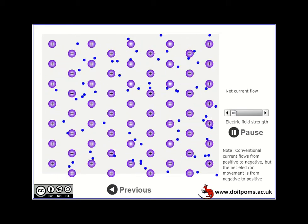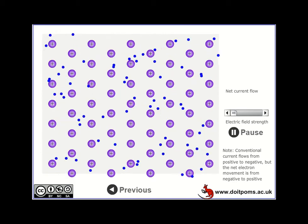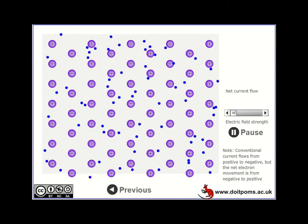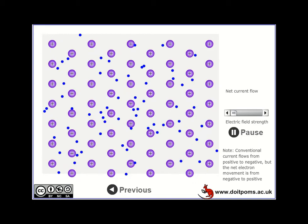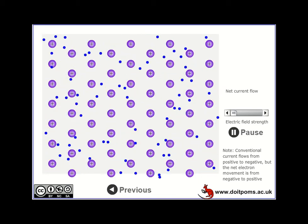Now we've got no current flow at the moment because the electrons are just moving at random. They've got some thermal energy, they're moving around, but there's no net flow because I've not applied a voltage across this material.